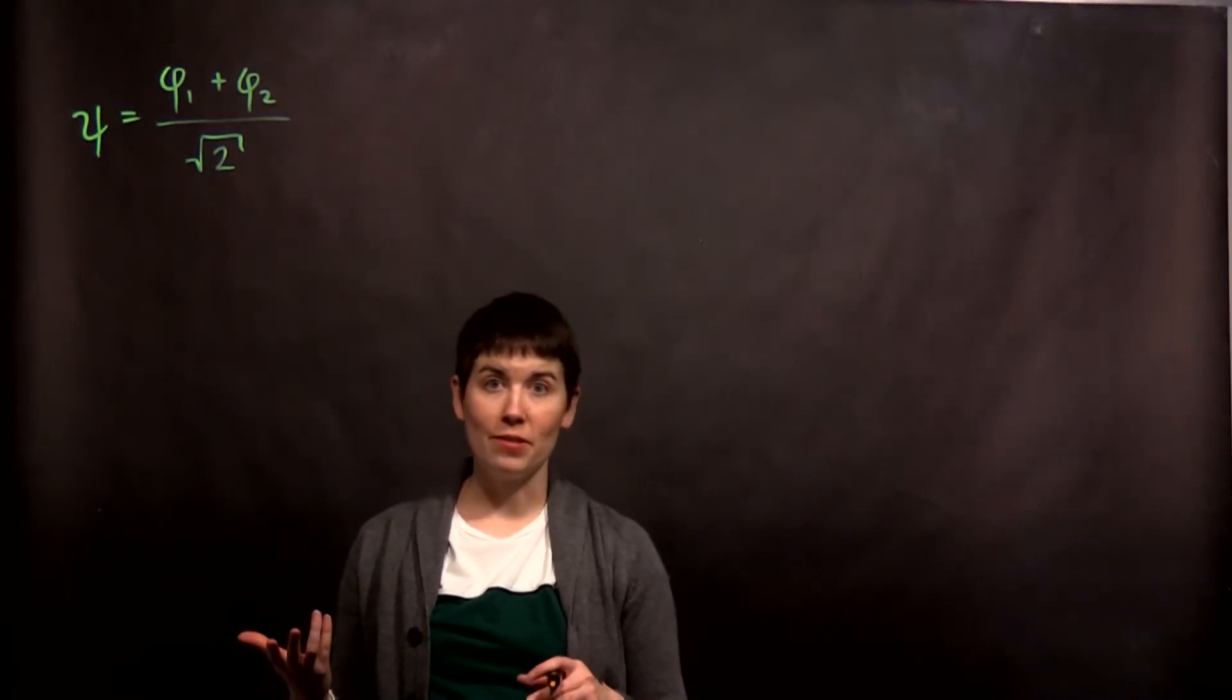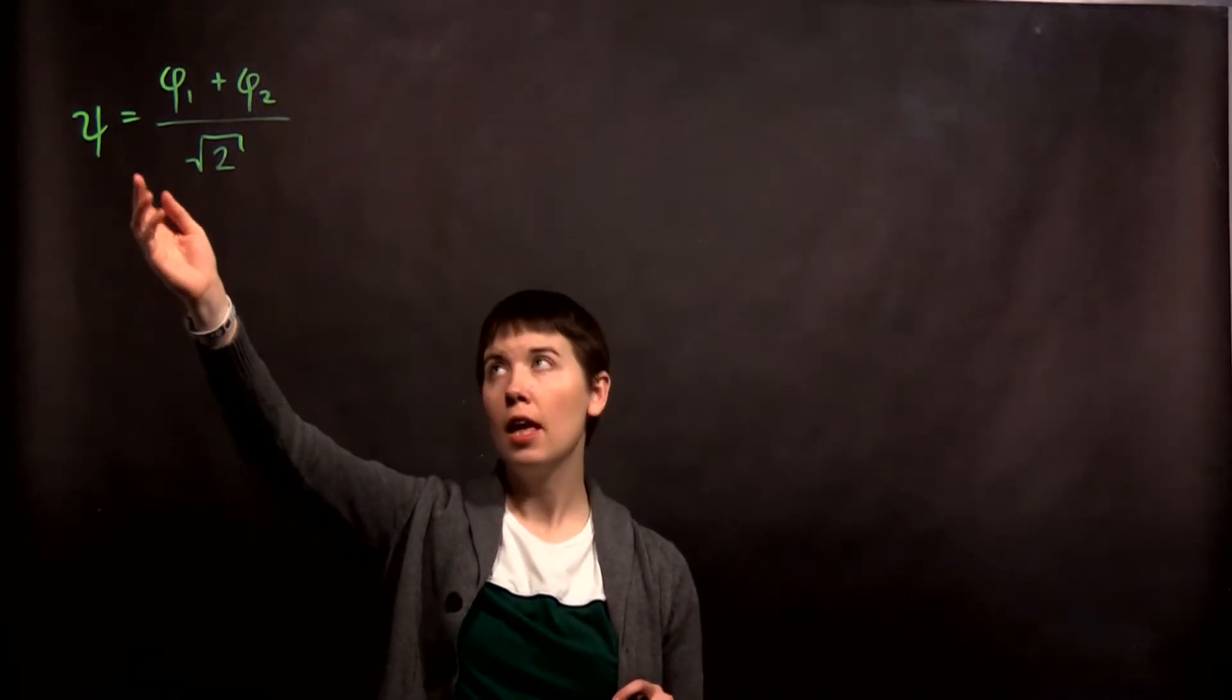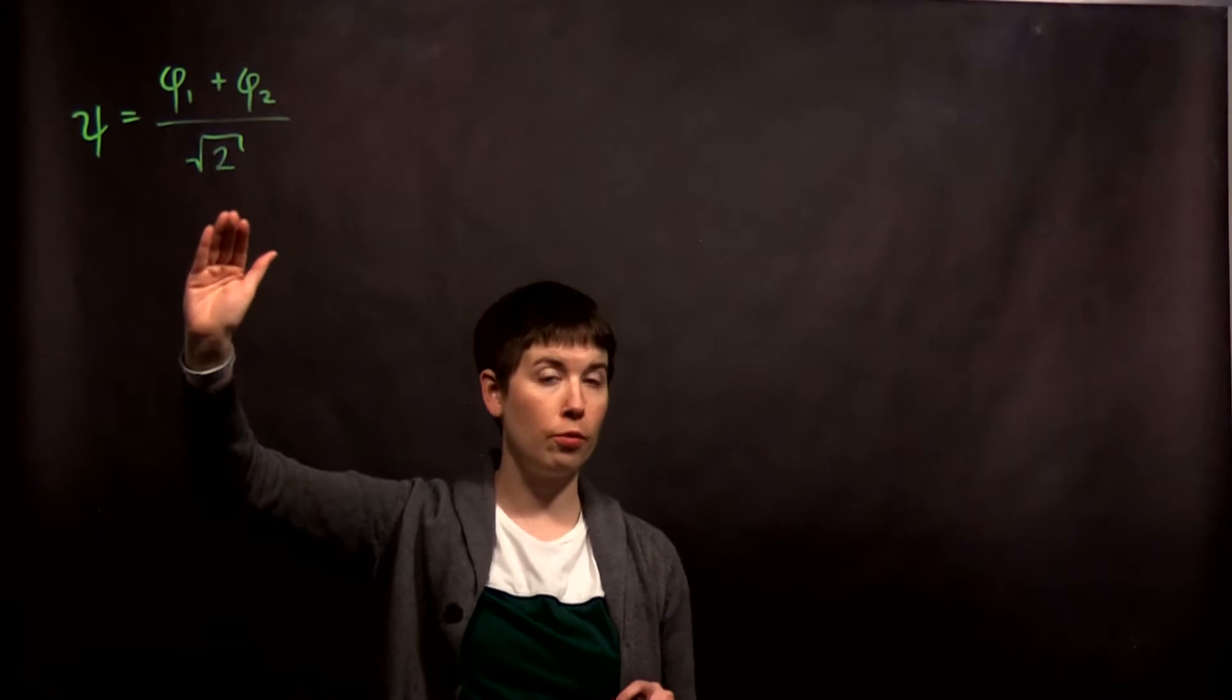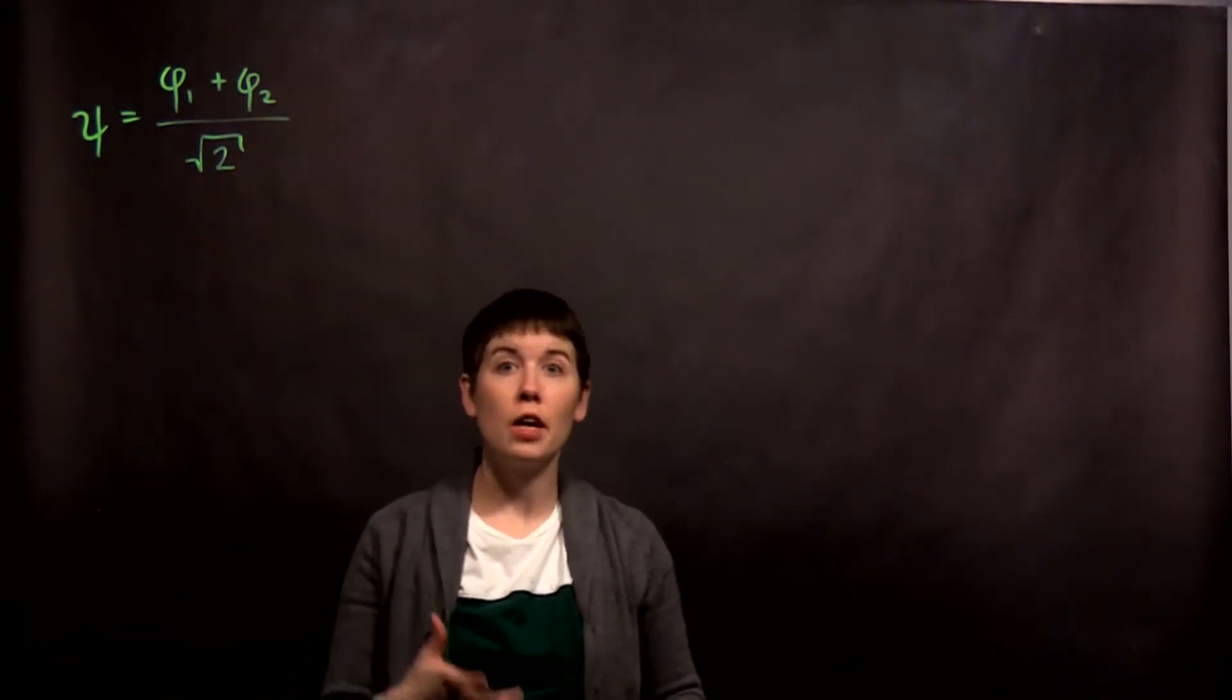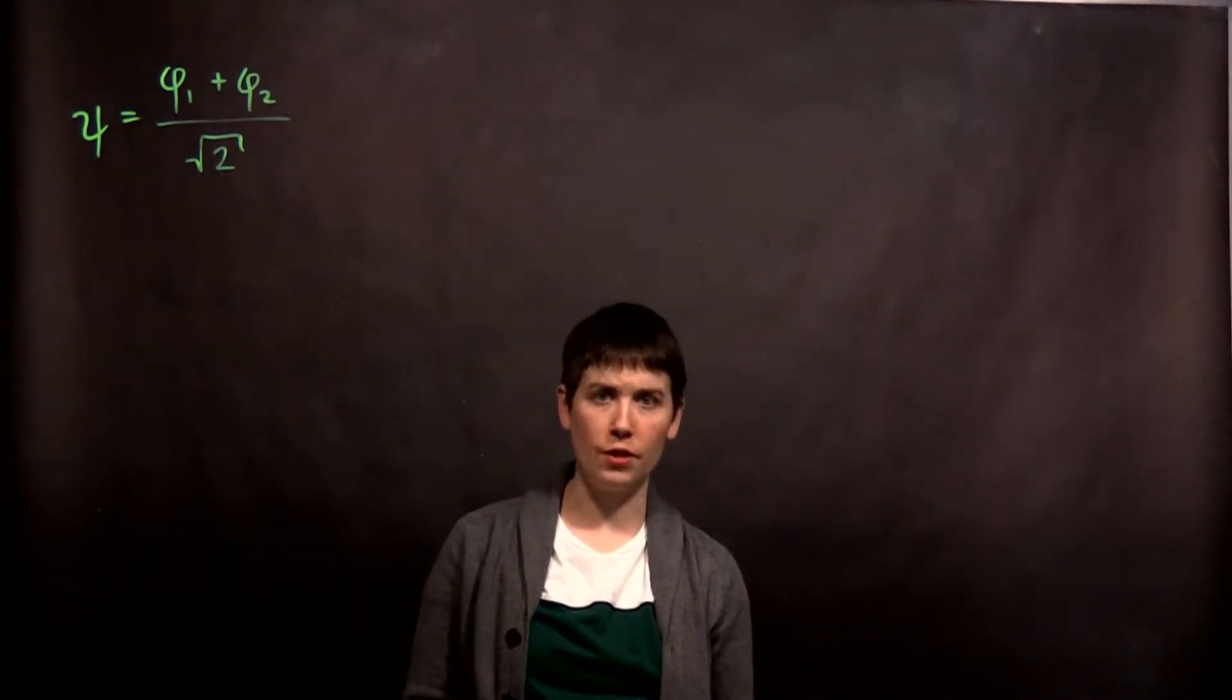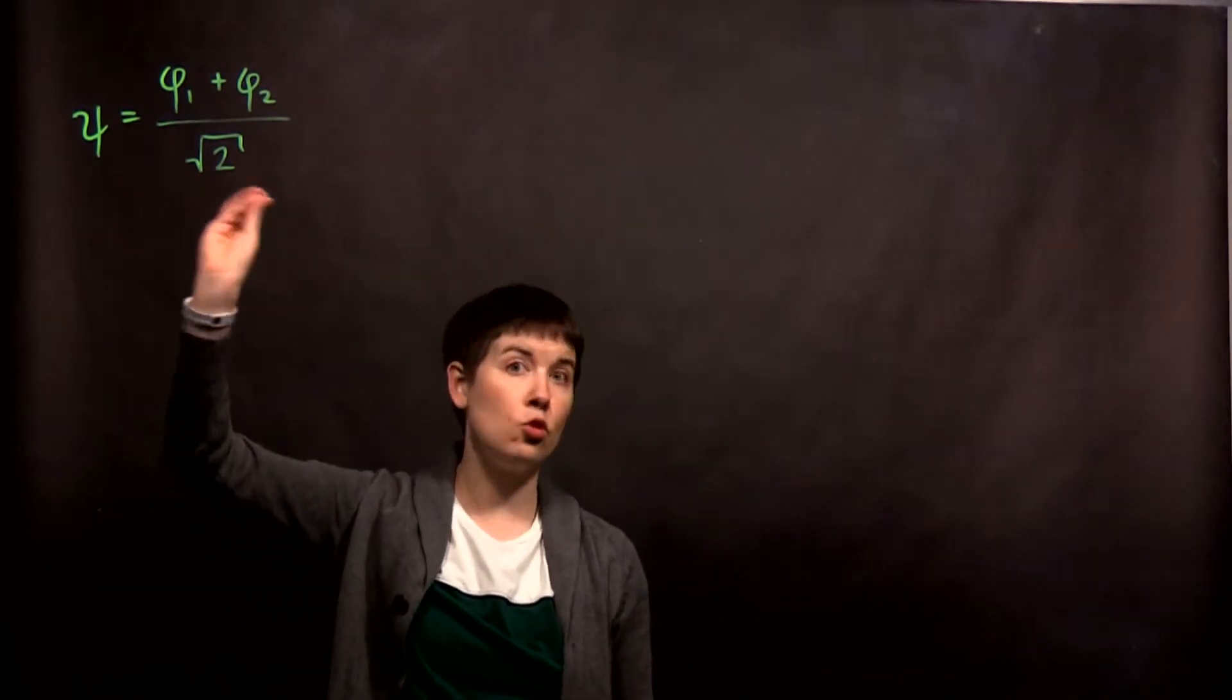Let's go through a superposition state, and that would look something like this. So I have my wave function, and I've written this as phi1 plus phi2 over square root of 2. What does this mean? Well, we use phi when we're talking about the energy eigenstates, so this is important. Sometimes you can choose your own notation.